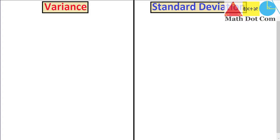Hello everyone. Today I am going to tell you the difference between variance and standard deviation. As we have seen them separately — what is variance, how to find the variance, and what is the standard deviation and how to find it. Although both of these are used as a measure of variability, or to check how far the data are from the mean or from each other, there is a difference between them. Let's see how they differ.